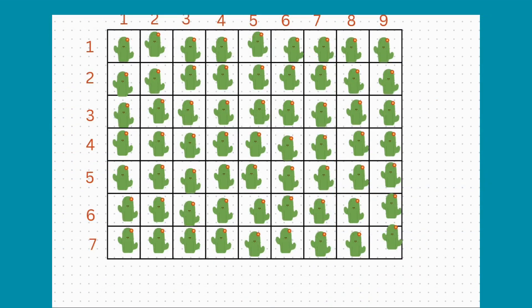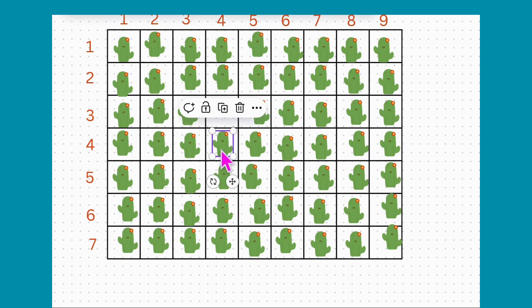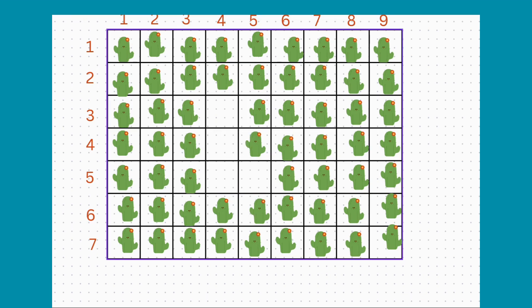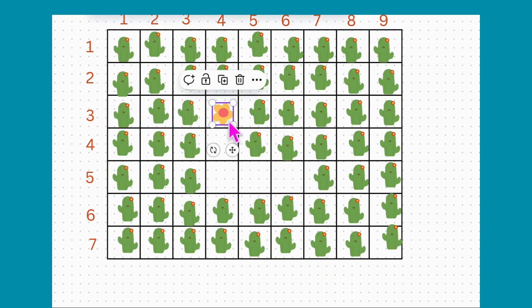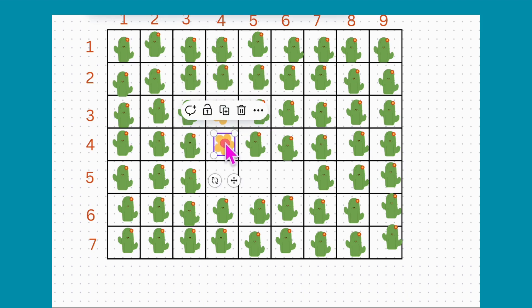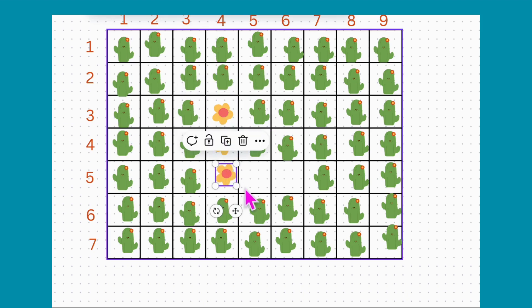Let's start coding inside the empty sprite. The idea is our stage will be divided into 9 columns and 7 rows. At first, every cell will be filled with walls — cactus. And then we'll replace some random cells with paths — flowers.